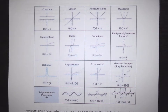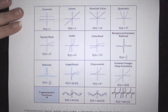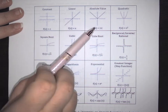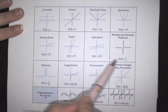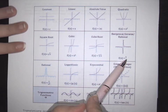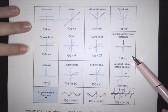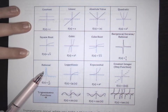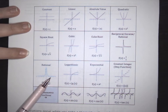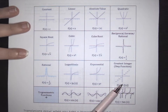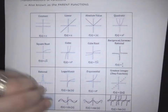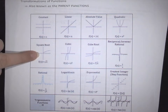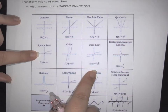You can find it by doing a simple Google search — there are many pictures of what are called parent functions. They are the most basic functions that we have. For example: constant, linear, absolute value, quadratic, square root, cubic, cube root, and reciprocal. These top eight functions are the most well-known. The rational, logarithmic, and exponential are used more in higher-level math, along with step functions and trig functions.